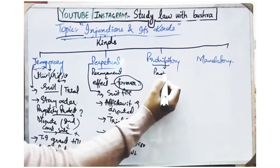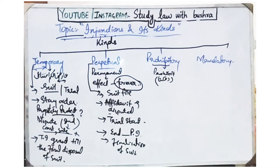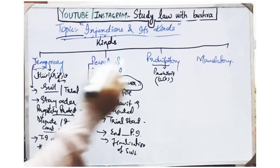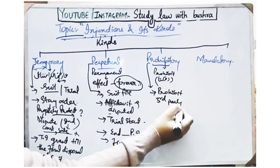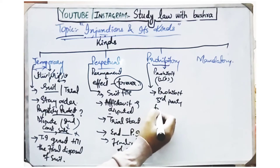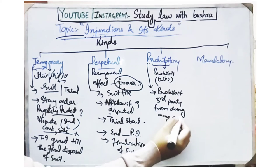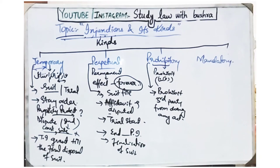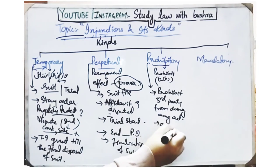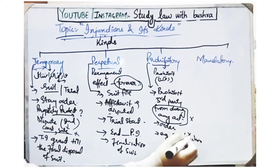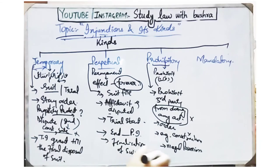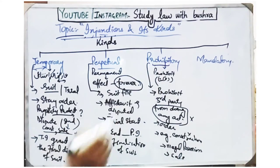Third is prohibitory injunctions. 'Prohibit' means to stop — the court is preventing the other party from performing any act. What this means — for example, if a second person comes and starts any kind of construction on the disputed property, or they are about to sell that property, or they want to take illegal possession of it — to stop all these acts, the court grants prohibitory injunctions so that the status of that property can be maintained.